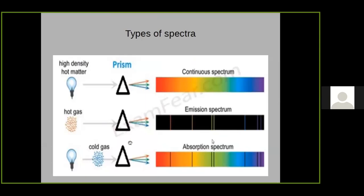When the substance is cold, we get an absorption spectrum. If the star is very hot or the substance is hot, we get an emission spectrum. If there is nothing in between, we get a continuous spectrum.